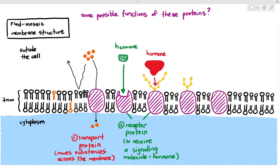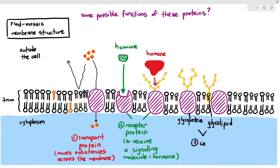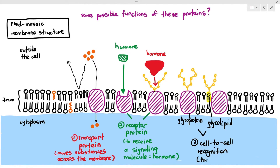Glycoproteins, and another structure known as glycolipid — a phospholipid with a carbohydrate chain — may have another function known as cell-to-cell recognition. It is not critical to fully internalize this now because cell-to-cell recognition is more relevant in Chapter 11 when we study immunity, but I will explain it briefly to give you a flavor of that chapter.